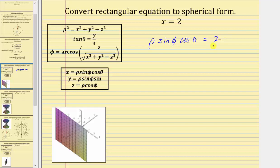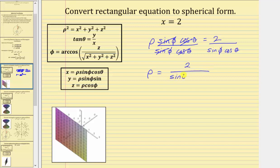Now we do have a spherical equation because it only contains rho, phi, and theta. Let's go ahead and solve for rho by dividing both sides by sine phi cosine theta. Simplifying, the left side simplifies to one, giving us rho equals two divided by the product of sine phi and cosine theta. We could also use trig identities: since one over sine phi equals cosecant phi, and one over cosine theta equals secant theta, we could write the spherical equation as rho equals two cosecant phi secant theta. Either of these last two equations would be correct.